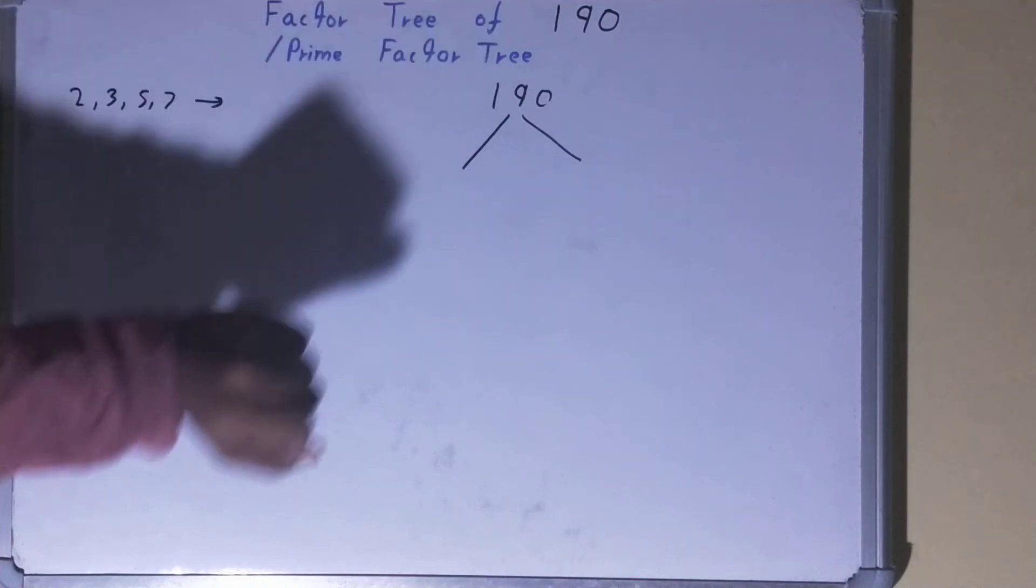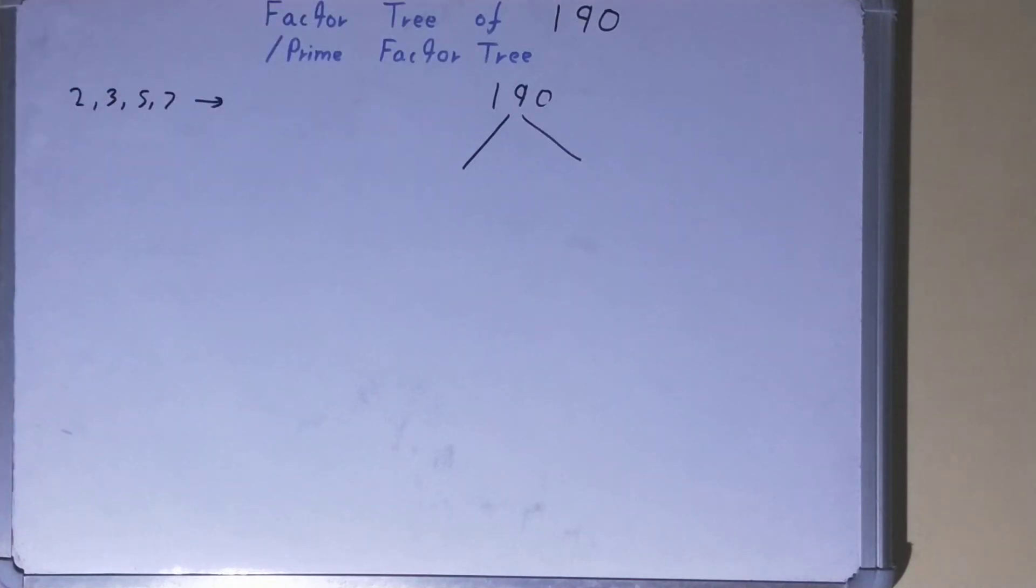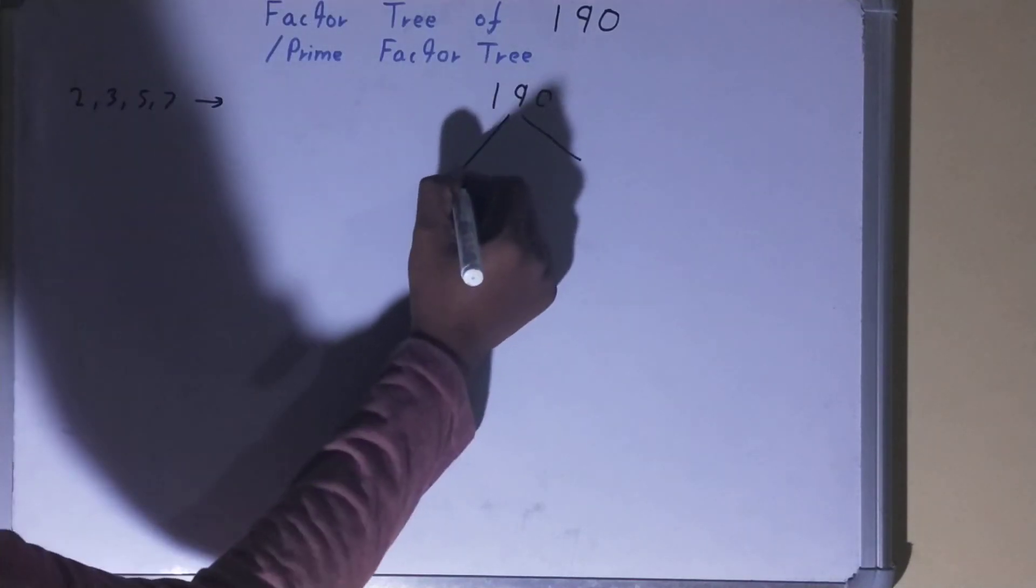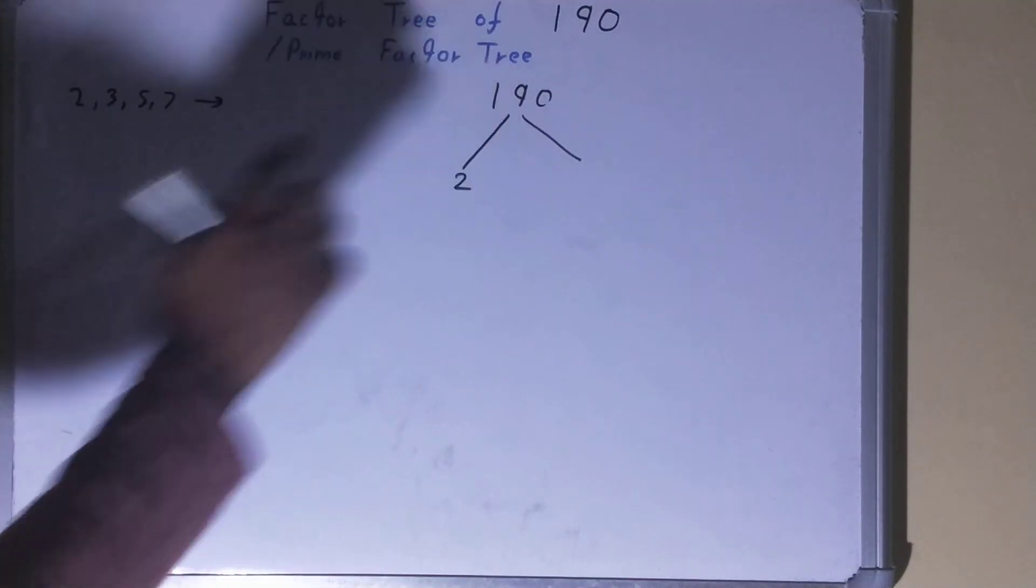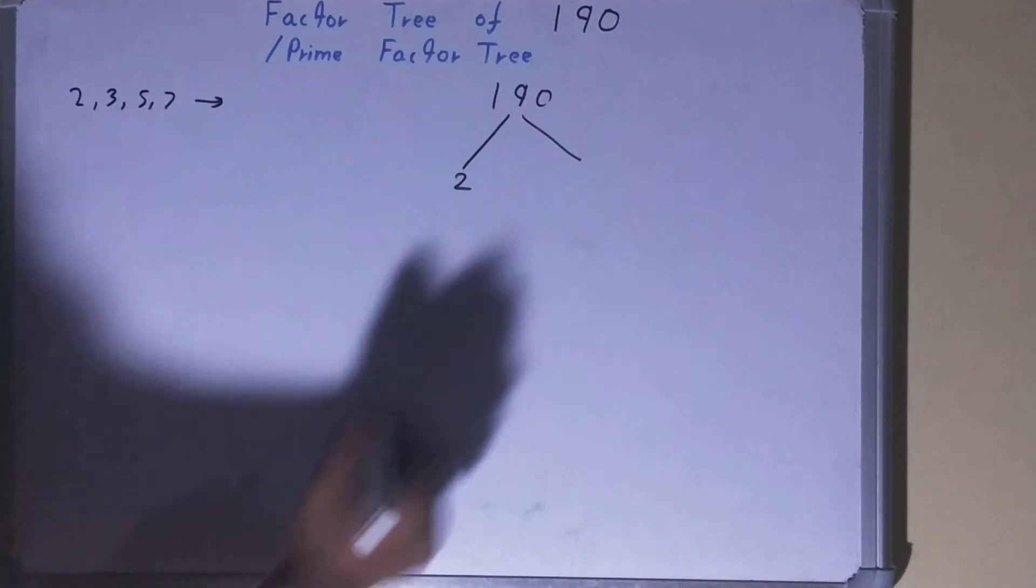Because of this, we check: is the number 190 divisible by 2? Yes. So one of the numbers will be 2, the other will be whatever we get after dividing. So 190 divided by 2, what we get, we get...